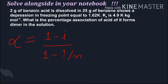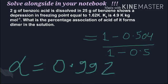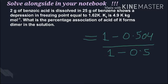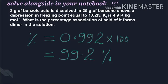Next we calculate alpha. The relation for alpha is: α = (1 - i) / (1 - 1/n). N is the number of units forming the dimer. Since a dimer forms (2 units becoming 1), 1/n = 1/2 = 0.5. Put all values to get alpha, then multiply by 100 for percentage.